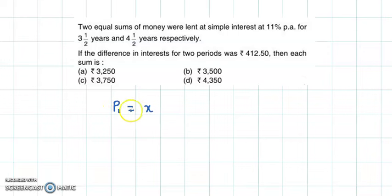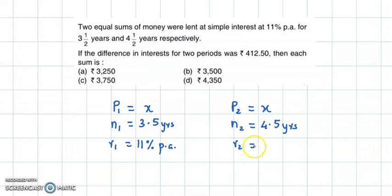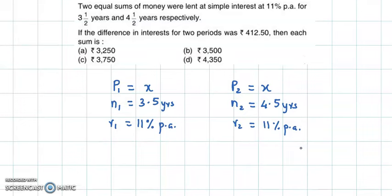Here the principal is the same in both cases. Let the principal be x, so P1 = x and P2 = x. The lending period n1 = 3.5 years and n2 = 4.5 years. The rate of interest R1 = 11% per annum and R2 = 11% per annum. The interest generated in both cases has a difference of 412.50.